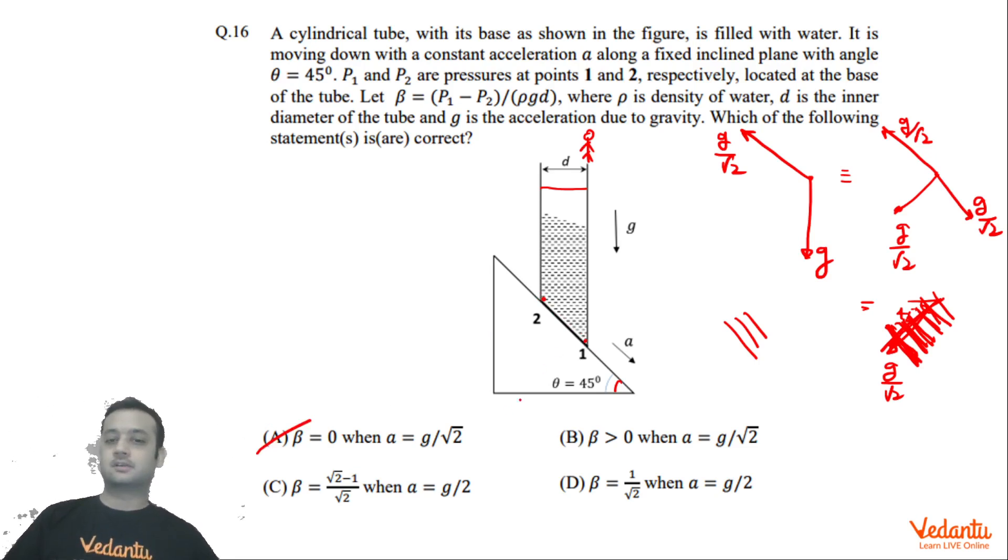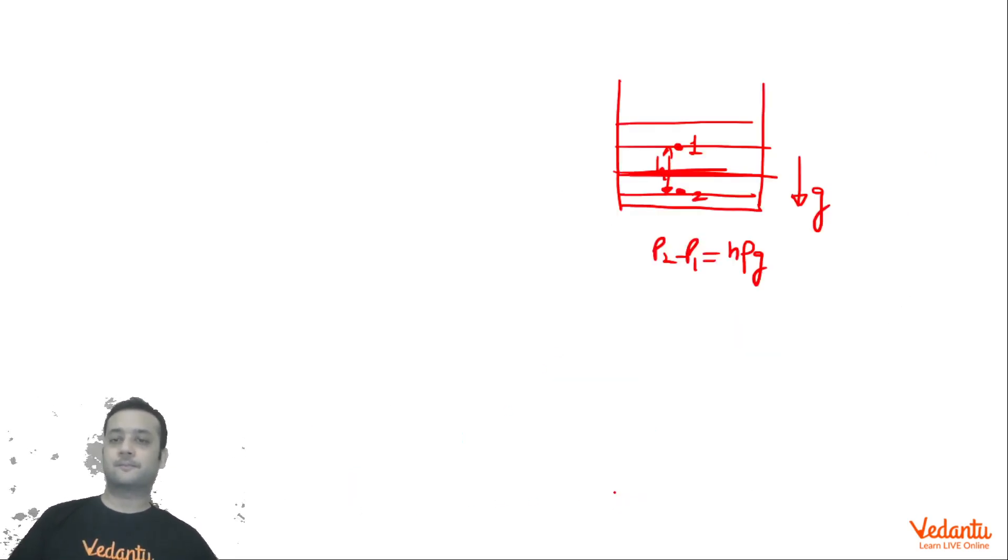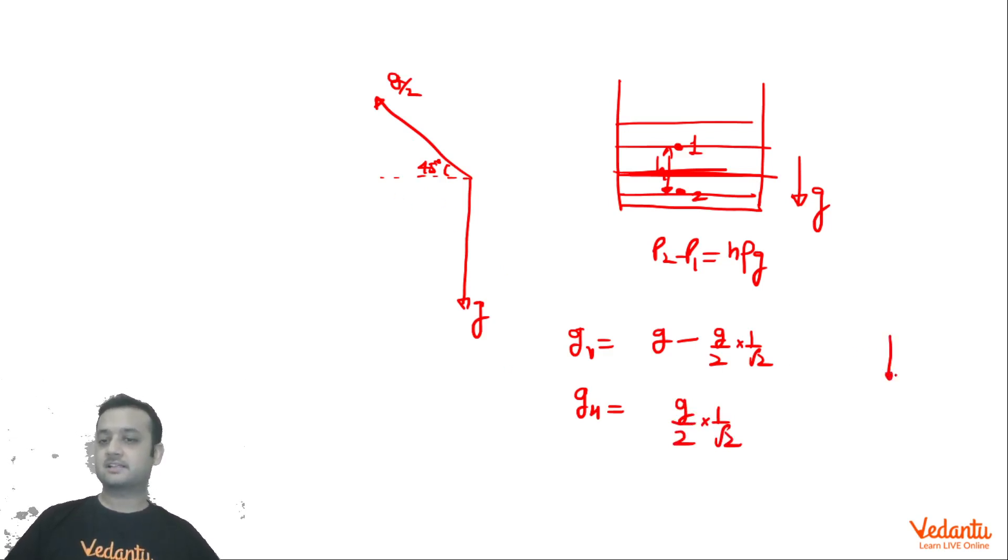Same logic we are going to apply for option C and D. Option C and D, acceleration is G by 2. One is the actual gravity. And one gravity is pseudo gravity G by 2. At an angle of 45 degree. So if we resolve this, we can say that gravity in the vertical direction will be g minus g by 2 sin 45. This is effective gravity in the vertical direction. And gravity in the horizontal direction will be g by 2 cos 45. That means g by 2 into 1 by root 2. So we can say that gravity in the vertical direction is this gv. And gravity in the horizontal direction is this gh.